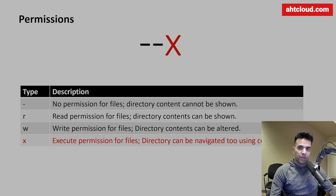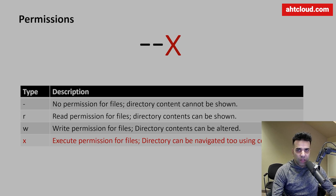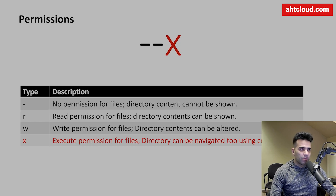The last character represents execute permission. A dash means you cannot execute or run the file. An 'x' means execute is granted — for directories, this means you can use `cd` to navigate into that directory.